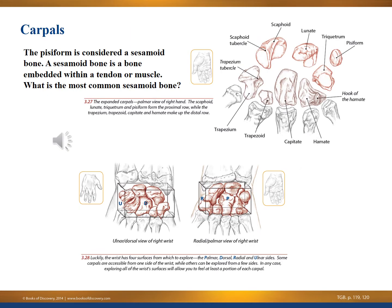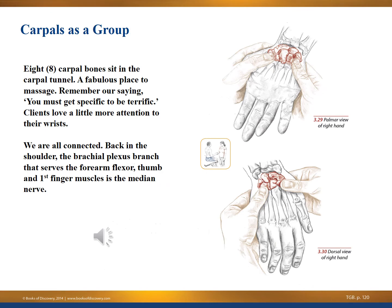The carpal bones make up the carpal tunnel — everybody has a carpal tunnel, but not everybody has carpal tunnel syndrome. One noteworthy carpal bone is the pisiform, considered a sesamoid bone — a bone embedded within a tendon or muscle. The most common sesamoid bone is the patella, the kneecap. The eight carpal bones sit in the carpal tunnel, and it's a fabulous place to massage — clients love a little more attention to their wrists.